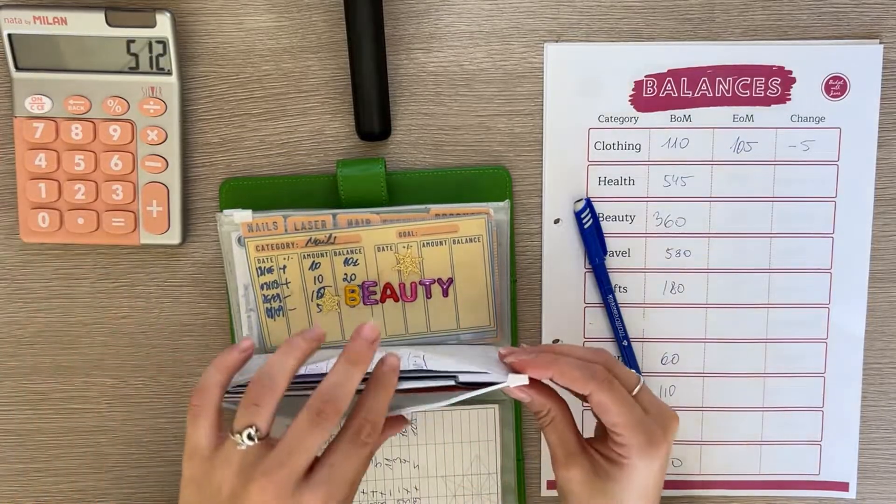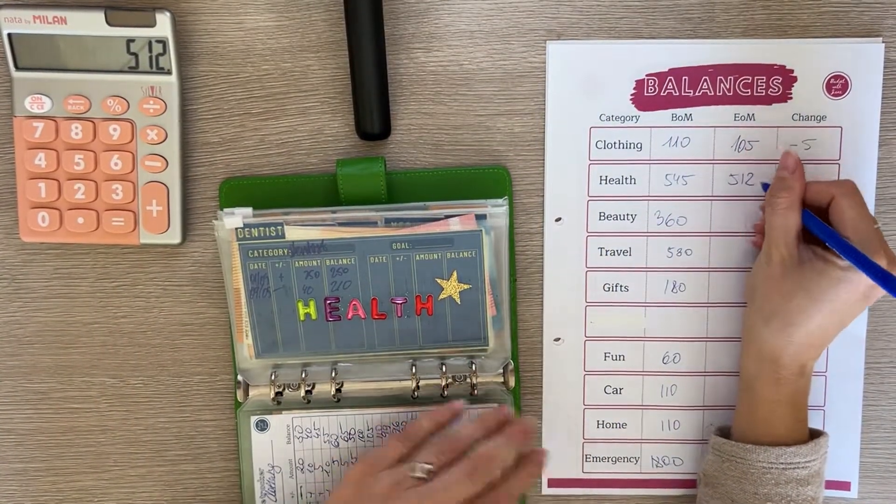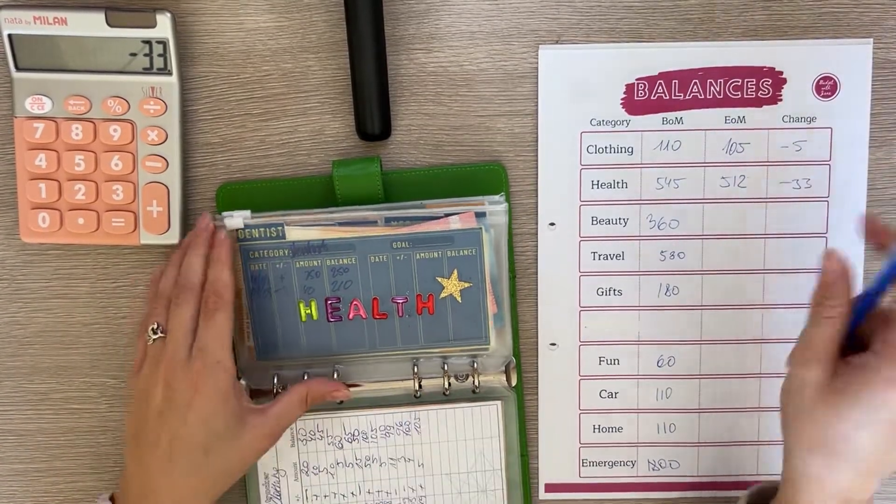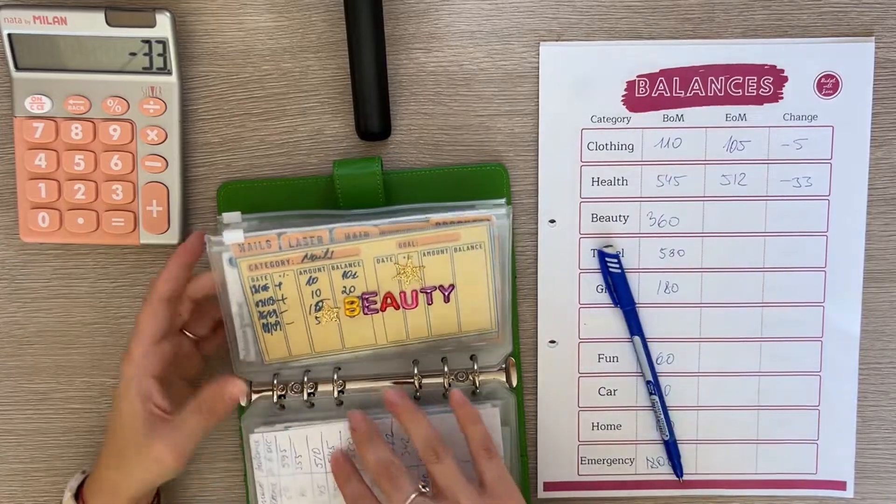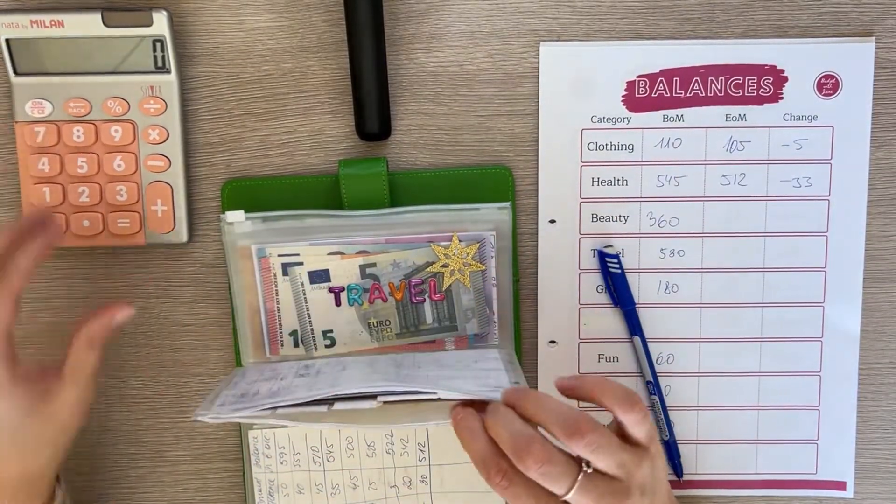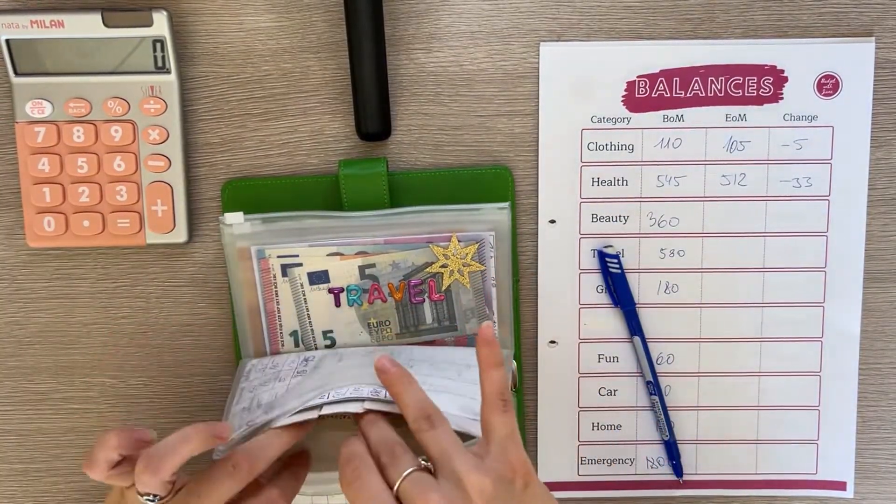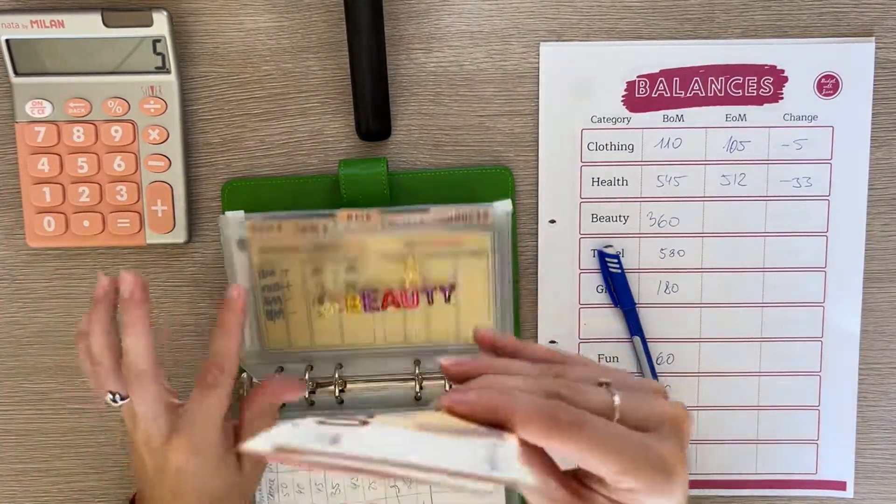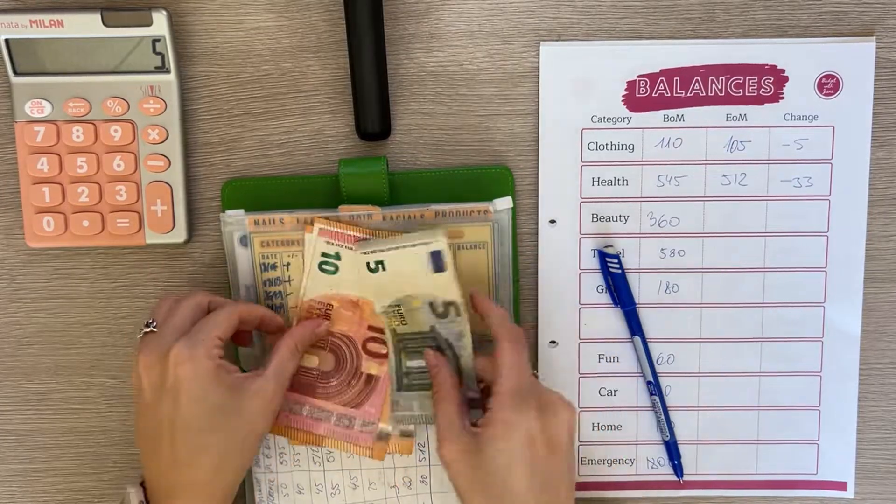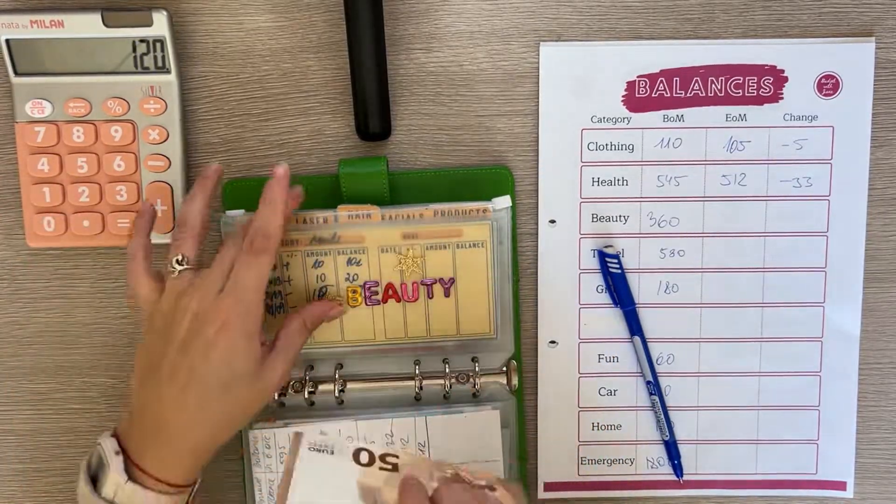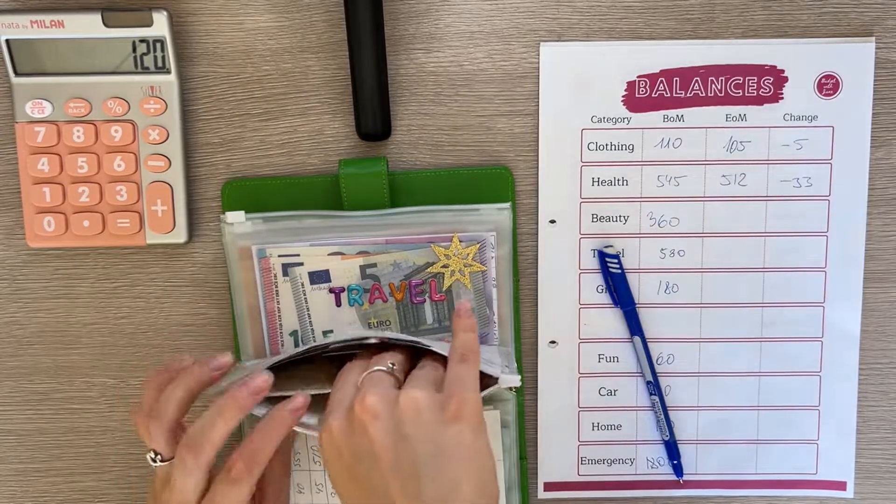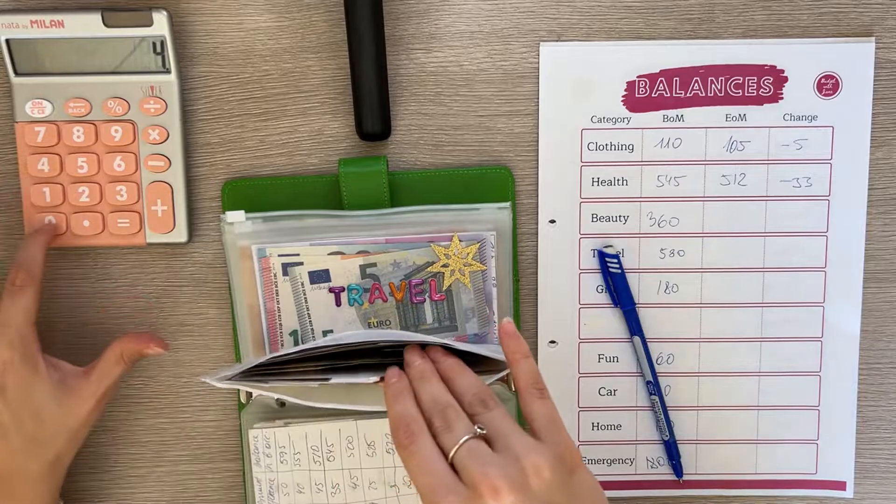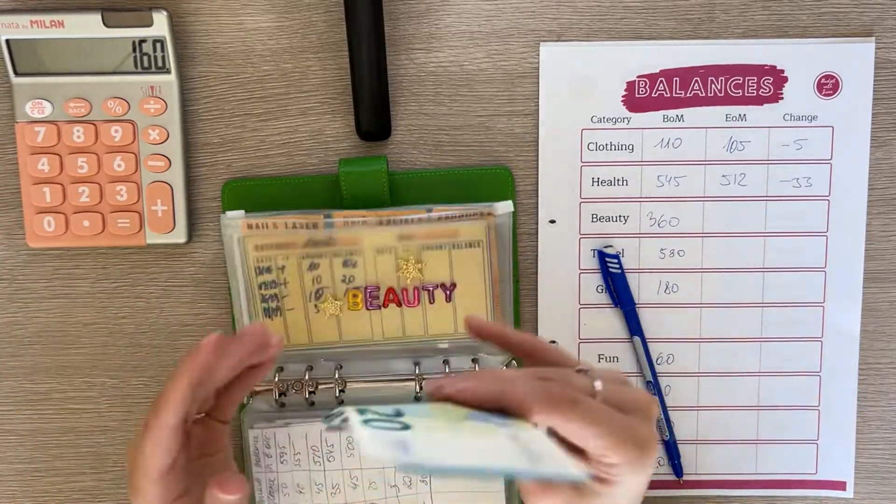The total is $512 and that's a negative 33 euro difference. Beauty is next. It had $360 at the beginning of the month, it's definitely less because I had a laser appointment. Nails has five, laser has $115.